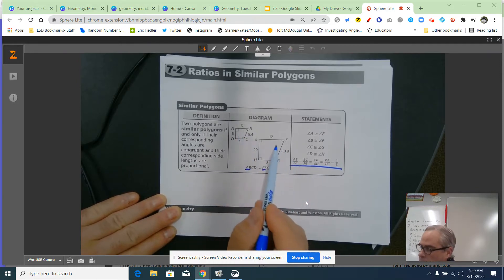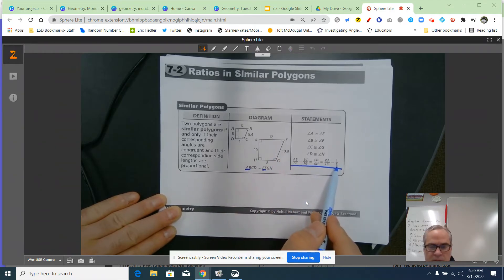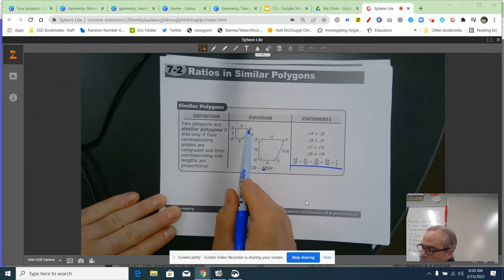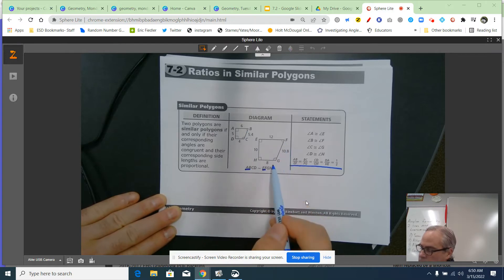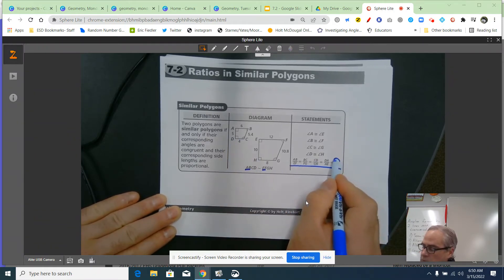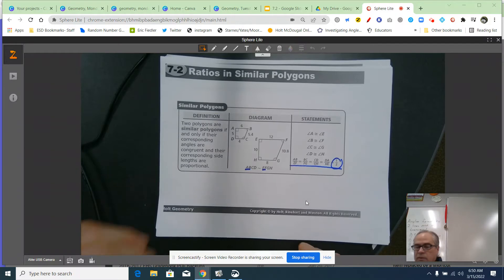And in all those ratios, we get the same proportion. AB over EF is 6 over 12, which reduces to one half. BC is 5.4, FG is 10.8. That also would reduce to one half. 4 over 8, 5 over 10. Those all reduce to the same value. That's what we mean by being in the same proportion.